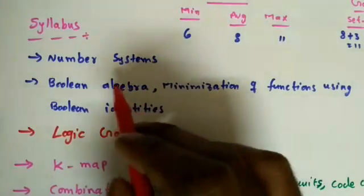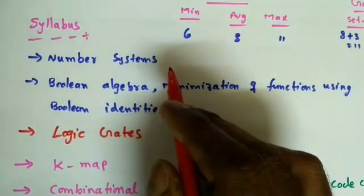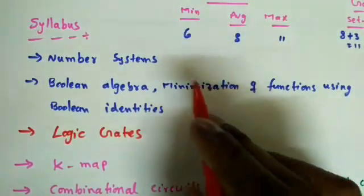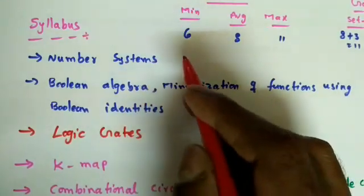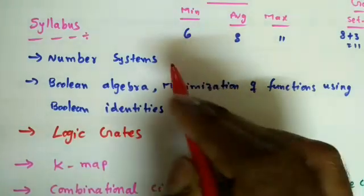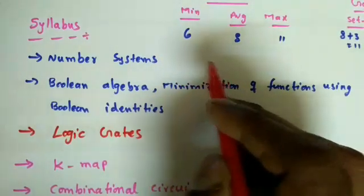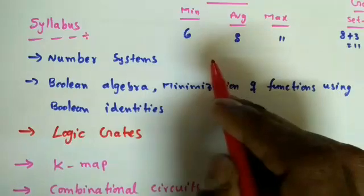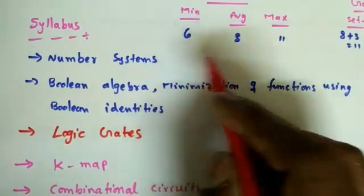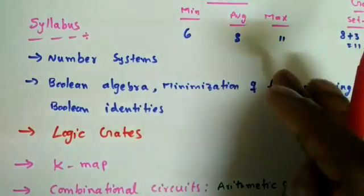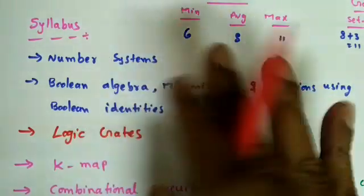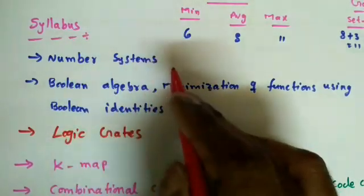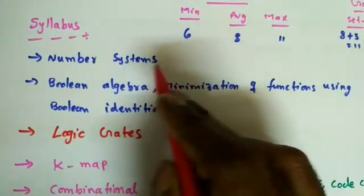The first topic in the syllabus is number systems — binary, decimal, octal, hexadecimal, and others. In decimal, numbers go from zero to nine; in binary, only zero or one; ternary uses zero to two; octal uses zero to seven; hexadecimal uses zero to fifteen. We'll cover how to convert between number systems and how to find one's complement and two's complement.